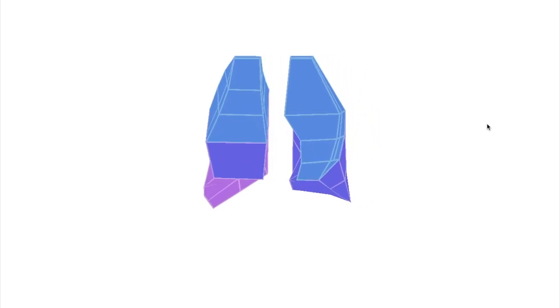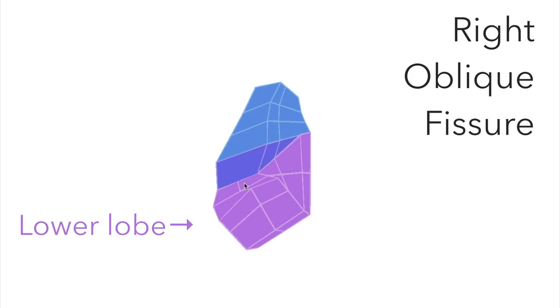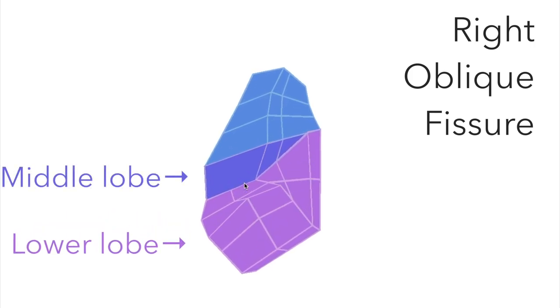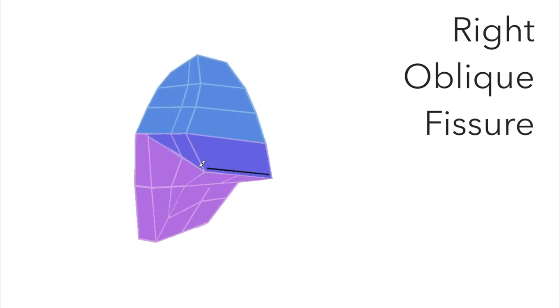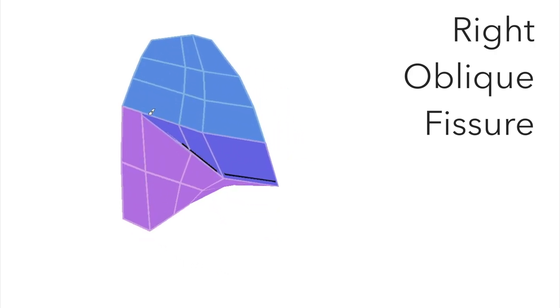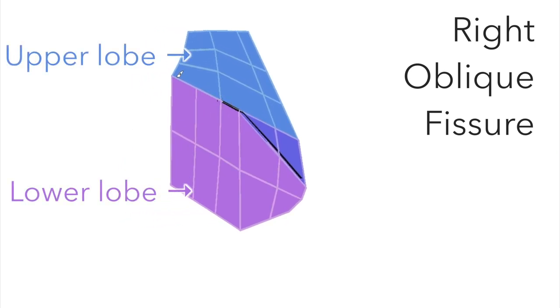We'll start with the right lung. Both lungs have oblique fissures, so let's draw that one out first. Around the front, it separates the lower lobe from the middle lobe. Going around the side, the middle lobe finishes, so the oblique fissure now separates the lower lobe from the upper lobe.